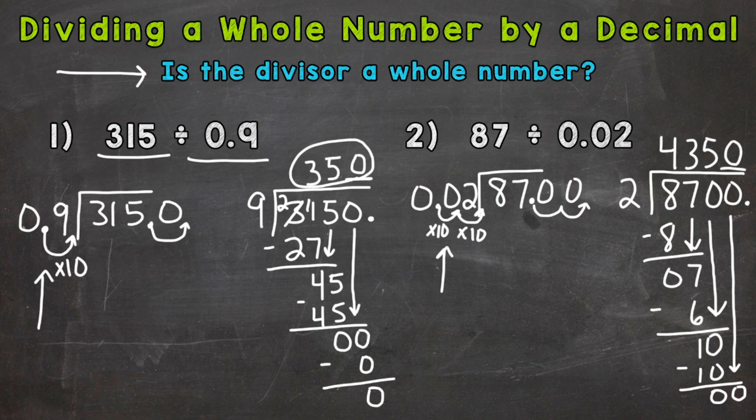0 times 2 is 0. Running out of room. 0 minus 0 is 0. Squeeze it in that corner there. So we are all done. We get to a clean cut 0 and an answer of 4,000. I'll put a comma that is not a decimal. 4,350.